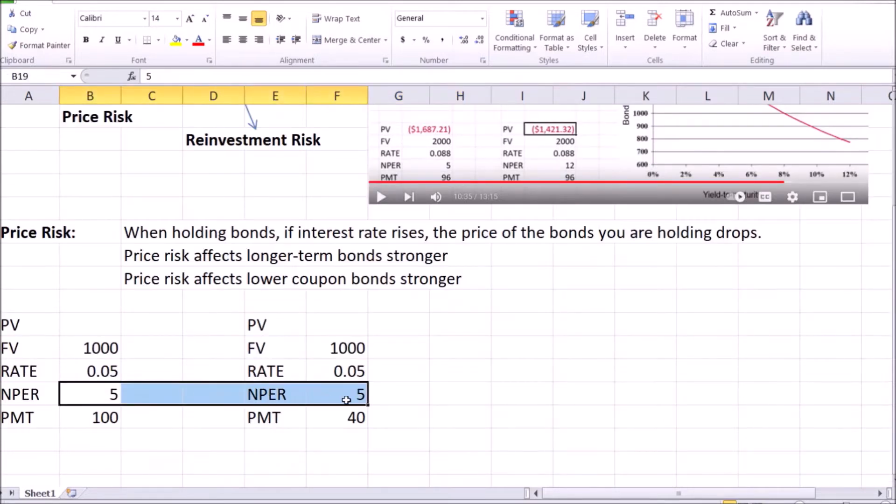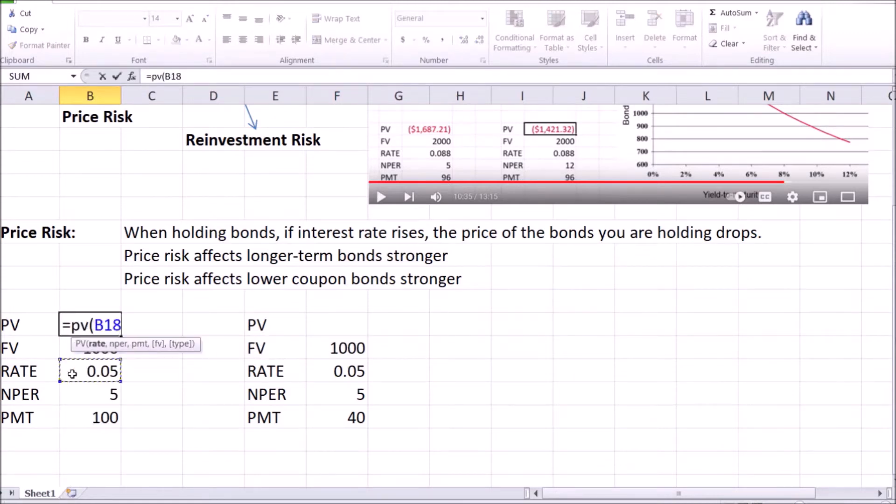Let's say we have two bonds, both mature in five years, both face the market interest rate, the yield to maturity of 5%. Let's assume the face value of $1,000 and the coupon rate of 10% for the first bond—that's a higher coupon bond—and for the second bond we're going to assume a 4% coupon rate, $40 out of the face value of $1,000. First let's calculate the prices: that equals PV, open the brackets, rate, number of periods, PMT and the face value.